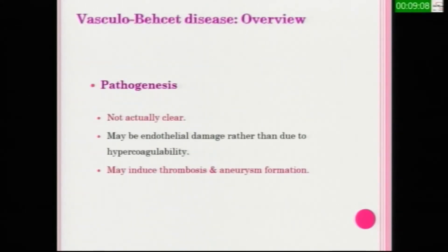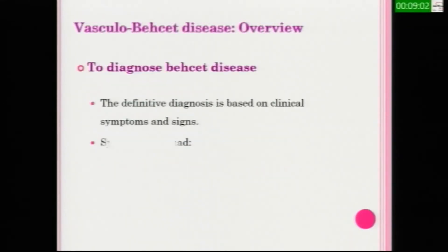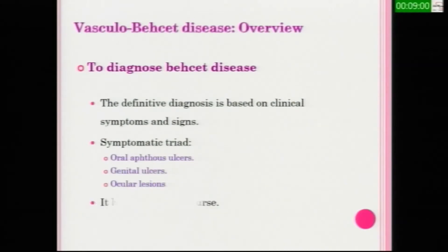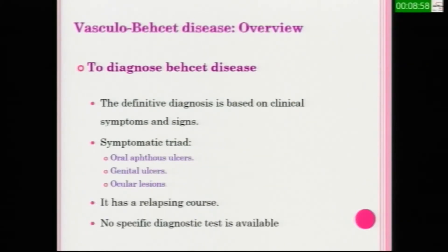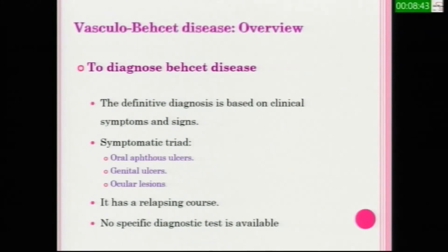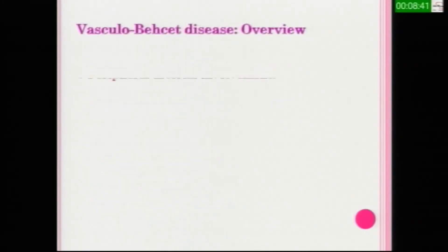The pathogenesis is not actually clear; it may be endothelial damage rather than hypercoagulability. Most of our cases present to the vascular clinic previously diagnosed by rheumatologists using the symptomatic triad of Behçet's Disease: oral aphthous ulcer, genital ulcer, or ocular lesion. The definitive diagnosis is based on these clinical symptoms and signs. Behçet's Disease has no specific diagnostic test.